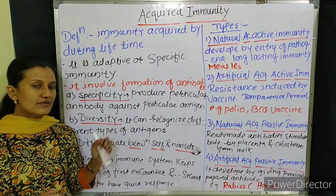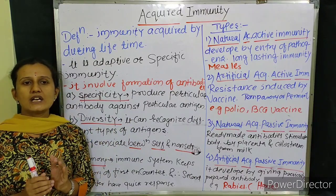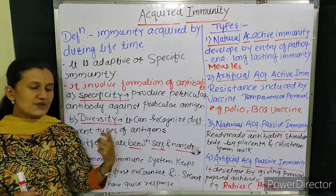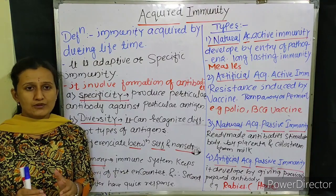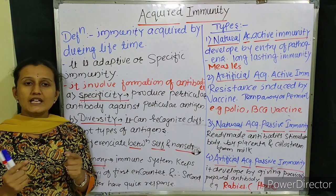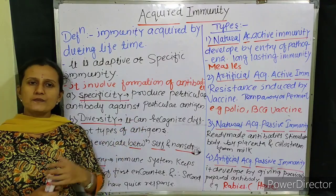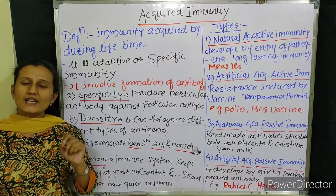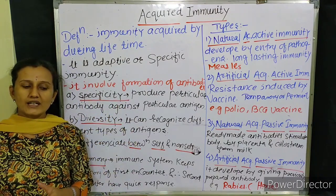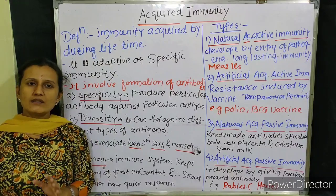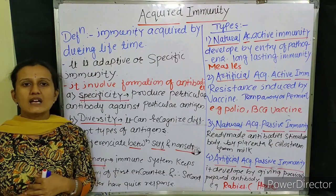The second property is diversity. Acquired immunity can recognize different types of antigens — a variety of antigens. In our biosphere, wherever living organisms exist on Earth — from the surface to several kilometers deep where bacteria and viruses can survive — there are many different types of microorganisms that can cause disease. Our acquired immunity can recognize and identify these various types of organisms, and it then produces antibodies as counter-actions against them.